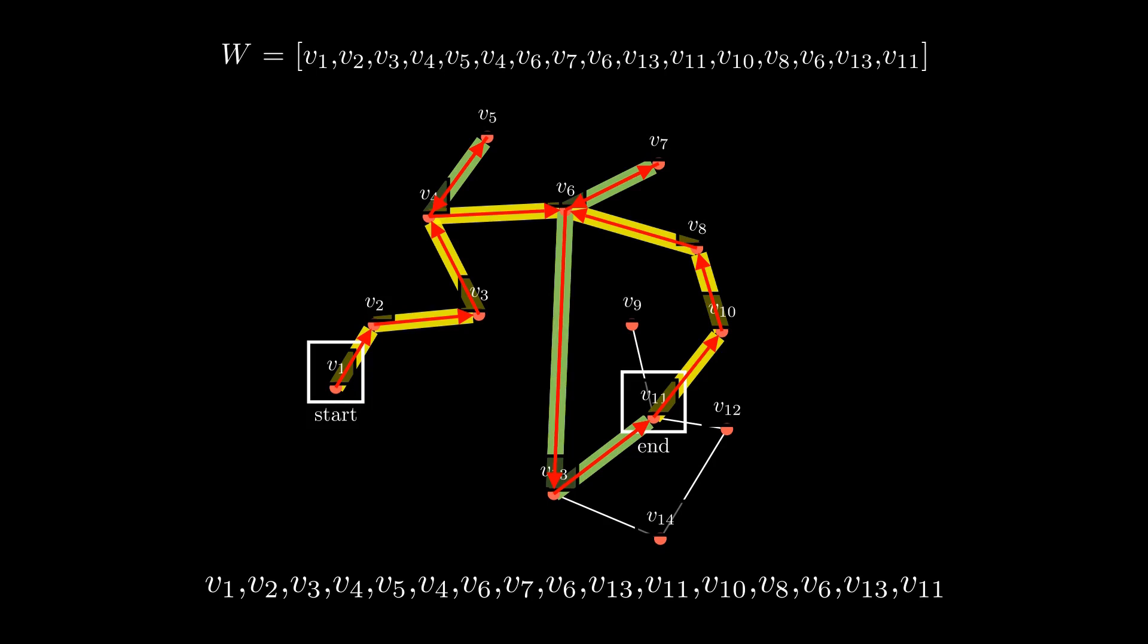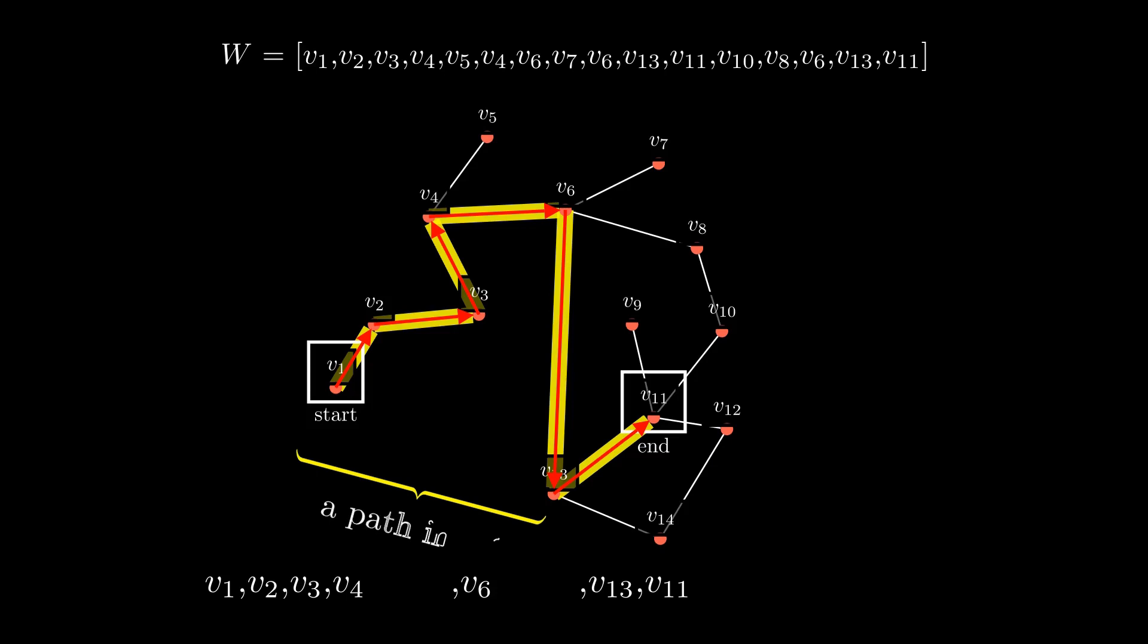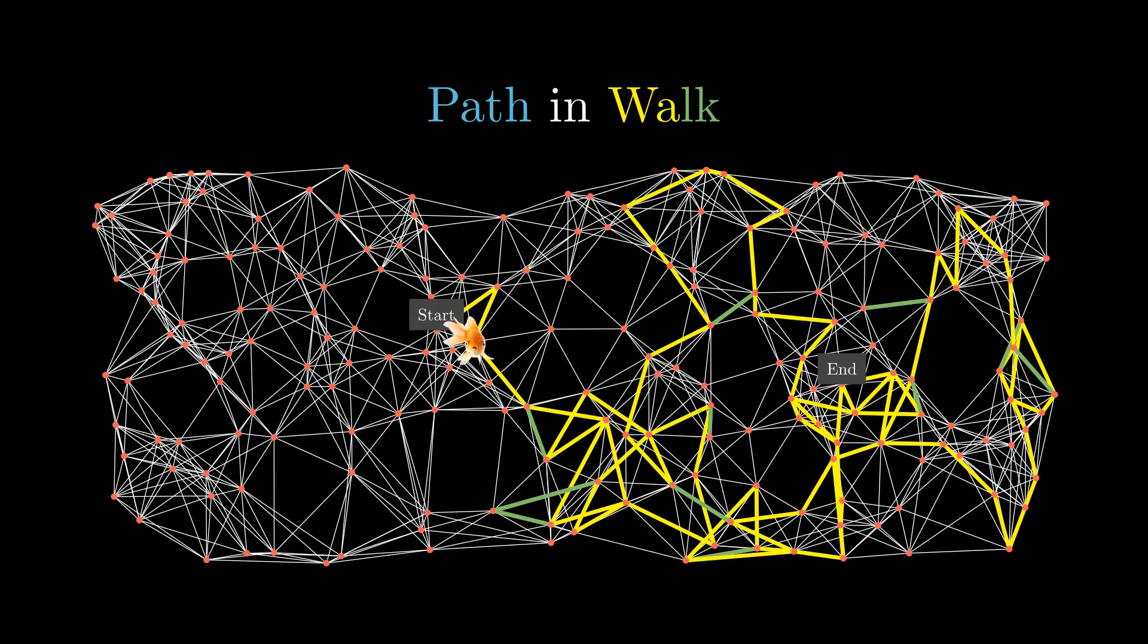To find a path in this walk, we just look for repeating vertex. Start with the ending vertex. If the ending vertex is repeated, then we remove the edges between the first one and the last one. If there is still repeating vertex, then we do the same thing again. That is, we remove the edges between the first occurring vertex and the last one. In other words, we shorten the journey, make it more efficient. If there is still another repeating vertex, we do the same thing again and again until all vertices are distinct. And we have our path. This is a path contained in this walk.